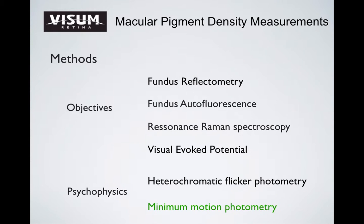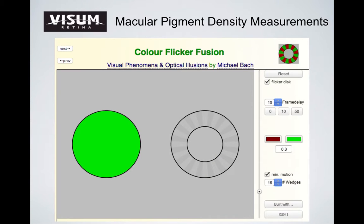The last technique is minimal motion photometry, which is related to heterochromatic flicker photometry. The method consists of color bars that move across a circular central visual field. The two colors correspond to the maximum and zero absorption wavelengths of macular pigments.